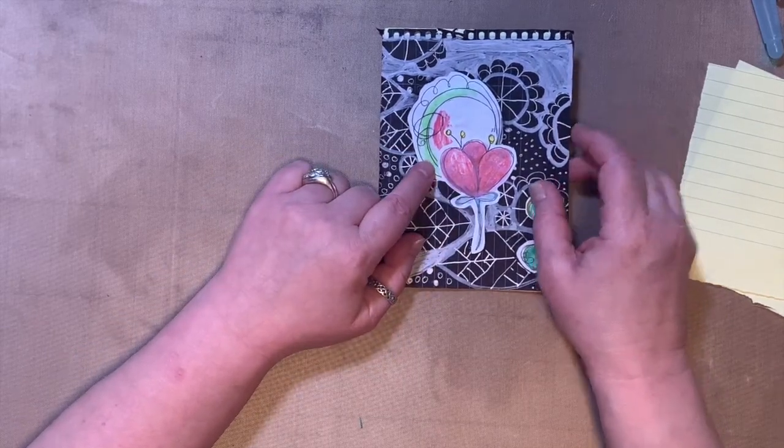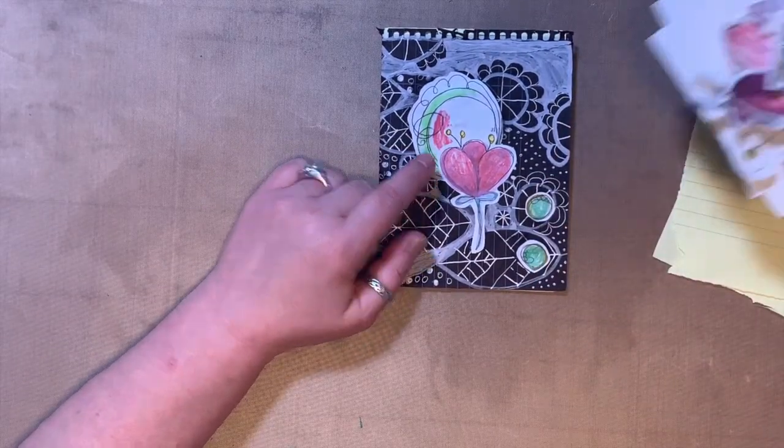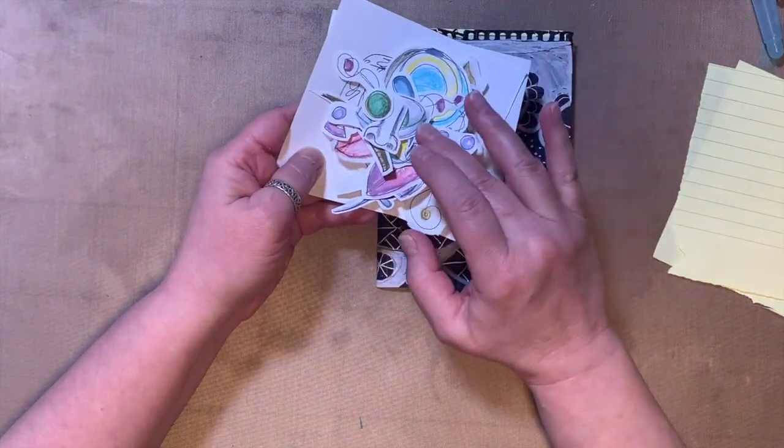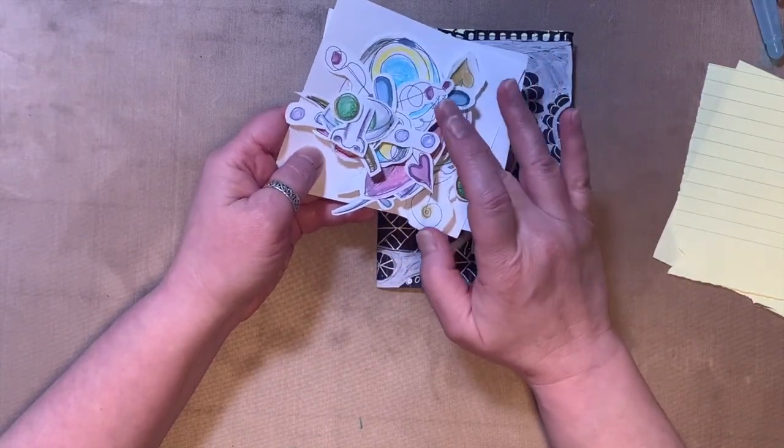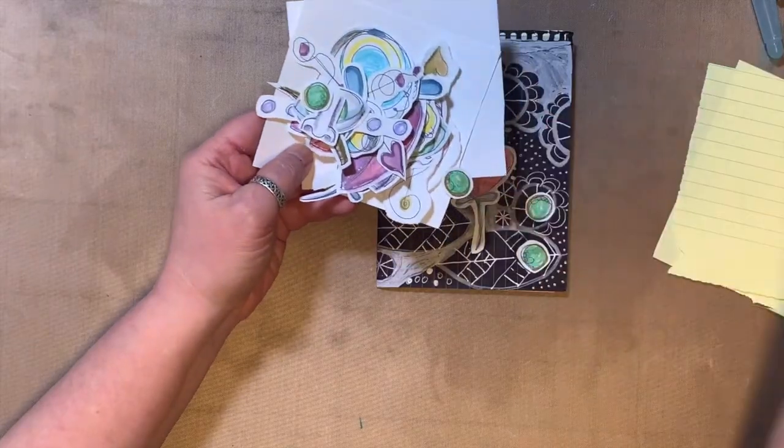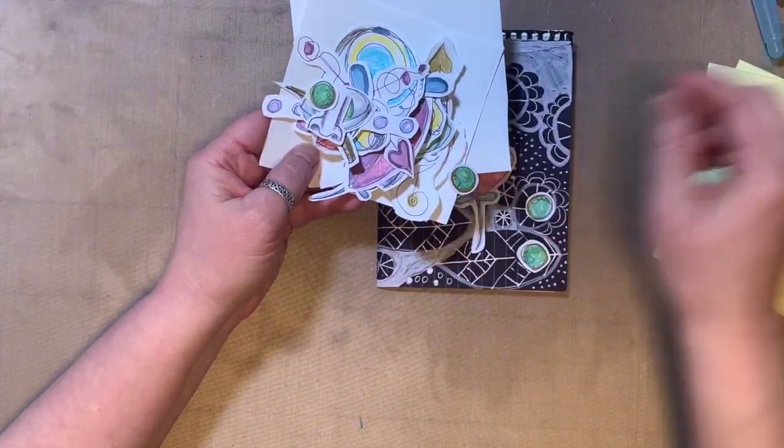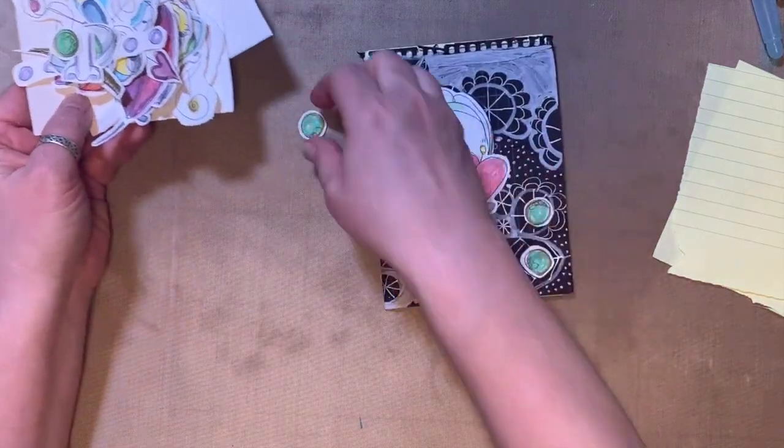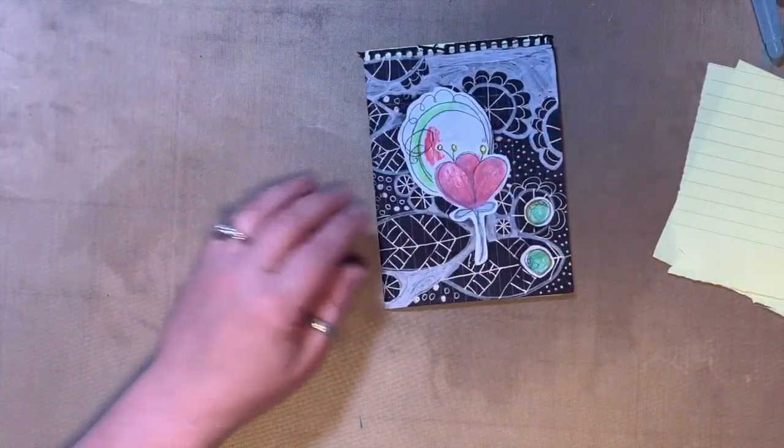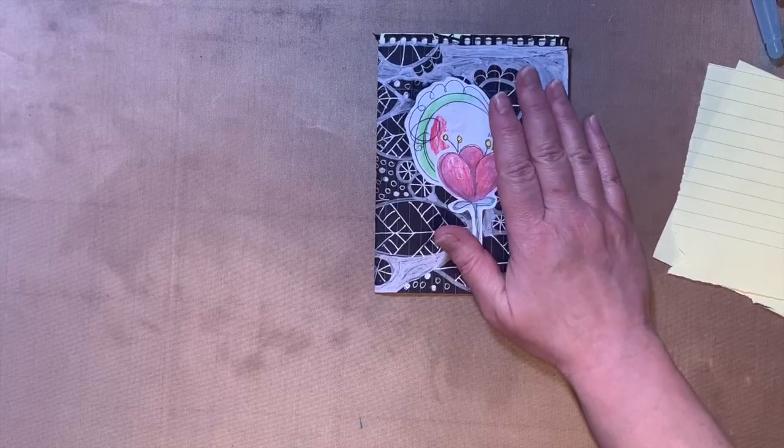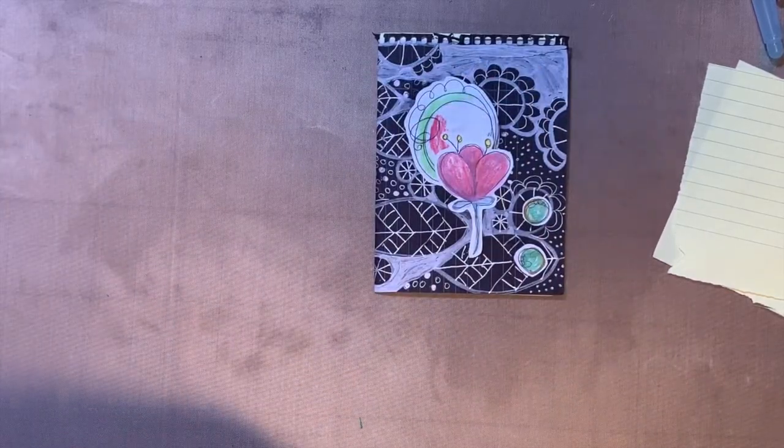You'll notice I glued some of our embellishments we made in one of our first videos. We made a bunch of these, then made a card with them, and in another video we did a journal page. I took some extra ones and put them here on my cover, which I really like the way that looks.